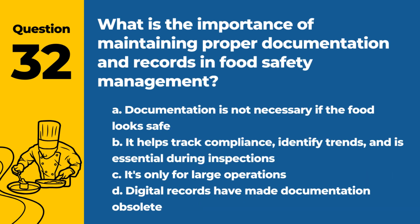Question 32. What is the importance of maintaining proper documentation and records in food safety management? A. Documentation is not necessary if the food looks safe. B. It helps track compliance, identify trends, and is essential during inspections. Answer: B. Keeping proper records is crucial for tracking compliance, spotting trends, and providing necessary information during inspections.